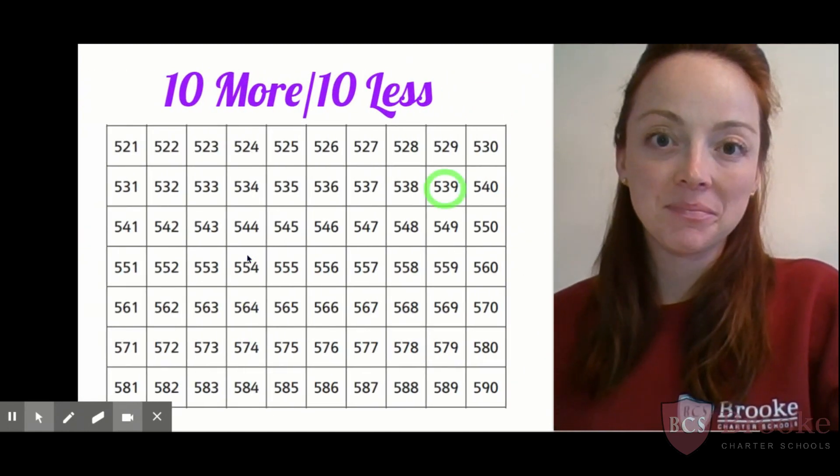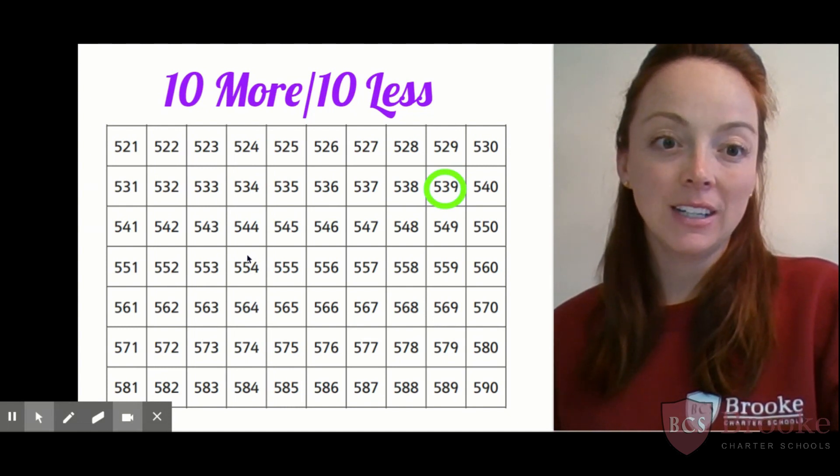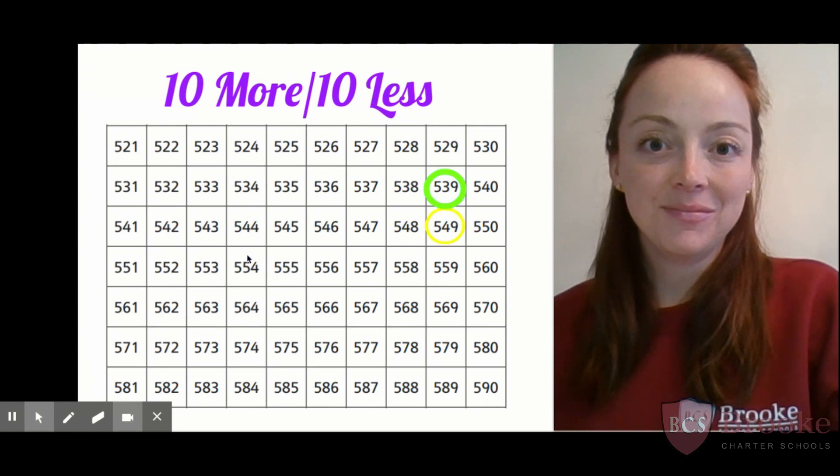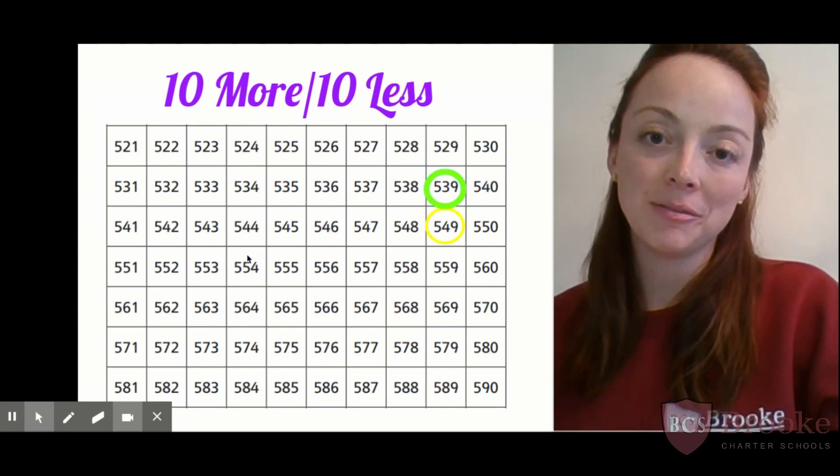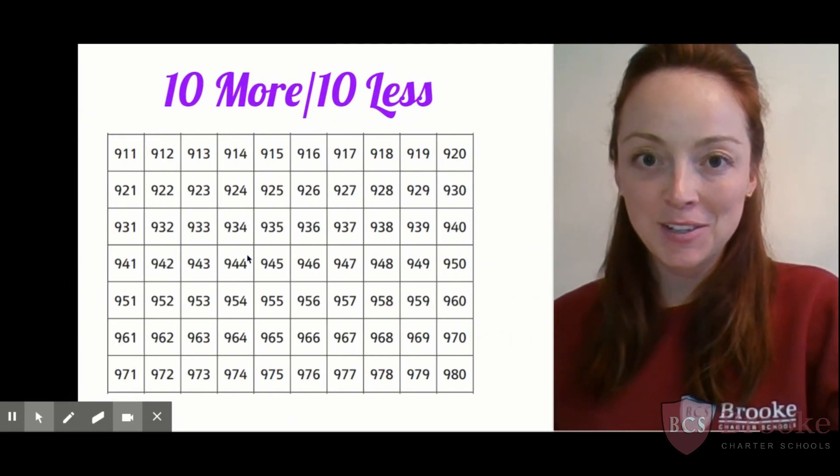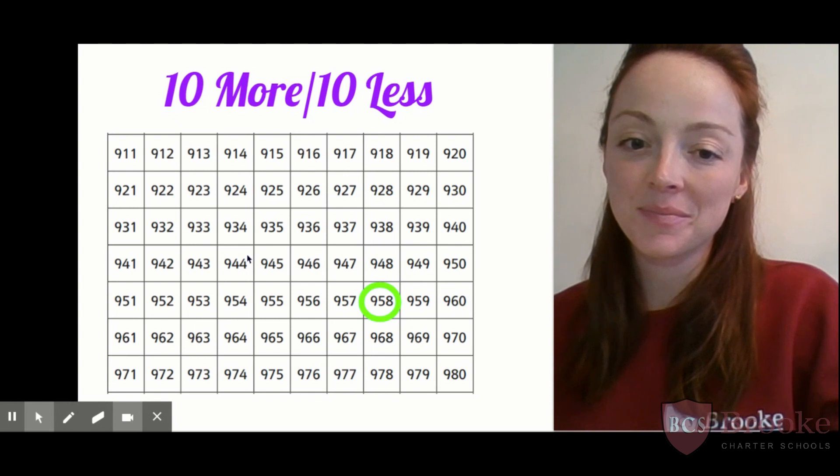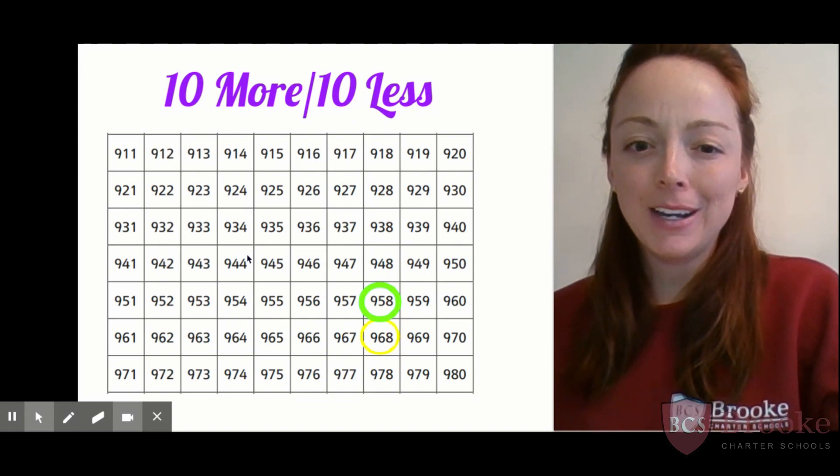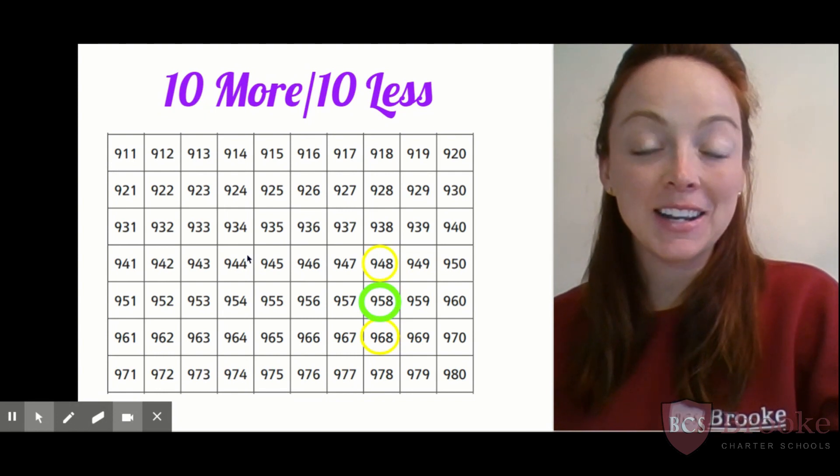Let's try another one. We're going to be working in the 500s this time. My number's going to be 539. So what's 10 more than 539? Instead of 3 10 sticks, I would have? Right, 4 10 sticks. So what would my number be? You got it, 549. What about if I'm at 539 and I take away a 10 stick or do 10 less? What number would I have? You got it, 529. All right, one more. Let's see if I can trick you. We're going to be working in the 900s. My number's 958. What's 10 more than 958? You got it, 968. One more 10 stick. What if I took away a 10 stick from 958? 10 less would be? Nice work, first grade. 948. You got it.